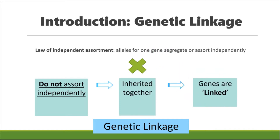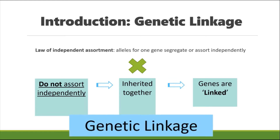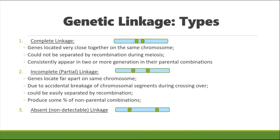Genes that are sufficiently close together and compactly packed on a chromosome tend to stick together and be inherited as a pair during the meiosis phase of sexual reproduction. This phenomenon is called genetic linkage.